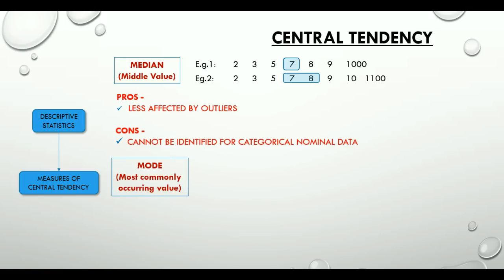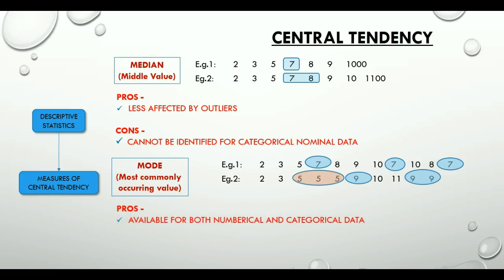The third measure of central tendency is the mode, the most commonly or frequently occurring value. Example 1 here clearly indicates that the mode is 7. Example 2 indicates two modes. Is that possible? Yes, it is possible, and that is why we use terms like unimodal and bimodal or multimodal data set. Mode applies to both numerical and categorical data. Good thing. However, it does not reflect the center of the distribution very well, and it is a point which we should remember.